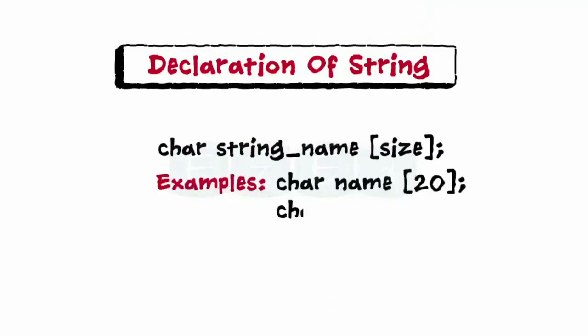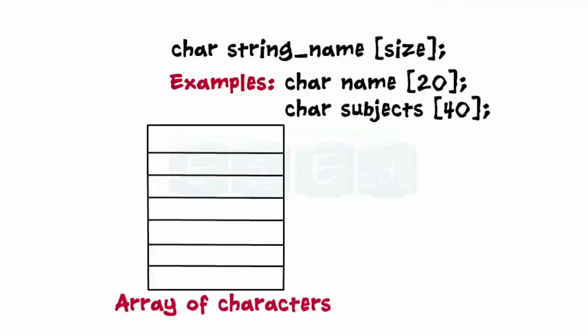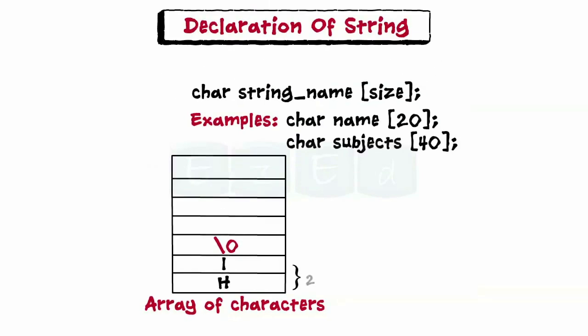Have a look at the examples. When a compiler assigns a string to the character array, it automatically assigns a null character at the end of the string. Therefore, the size of the array is the number of characters plus one for the null character.